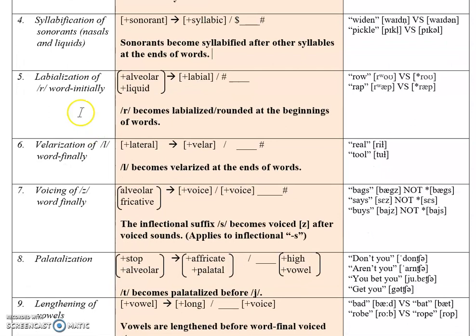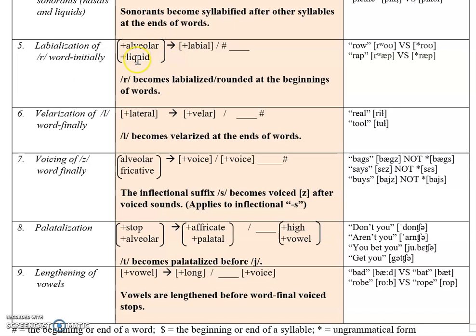Let's look at labialization of /r/ word-initially. /r/ is an alveolar liquid — there are other terms used for it — but it becomes labialized, gaining the feature [+labial], at the beginning of a word. Let's try that out with the word 'rap.'